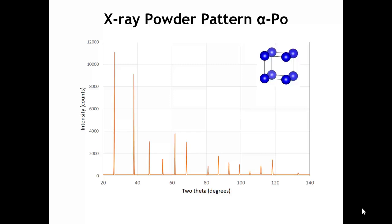To illustrate this, let's go back to the structure of alpha polonium, which we encountered a few lectures ago. Alpha polonium has a very simple structure — one atom per unit cell, located on the corners of a primitive cubic lattice. Here is the simulated powder diffraction pattern for alpha polonium. We can see that in general, the peaks are stronger at low angles and weaker at high angles. But there's more to the story than that.